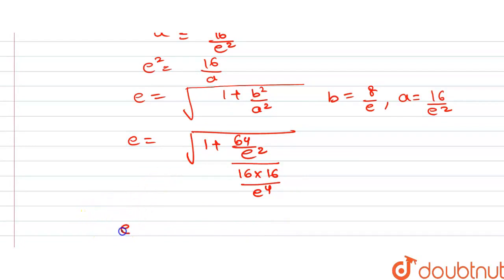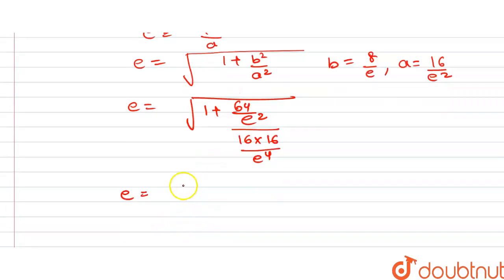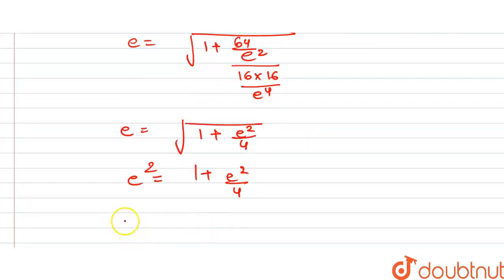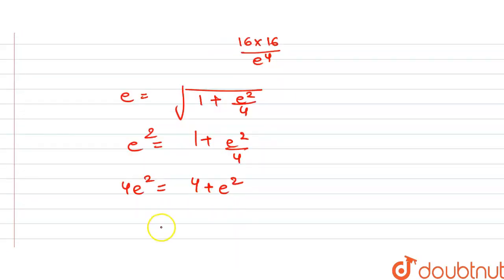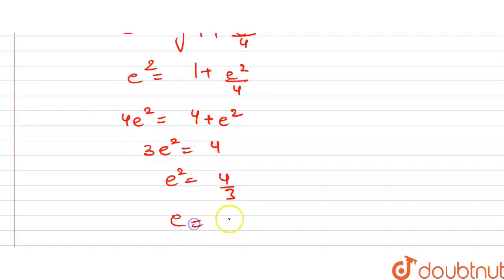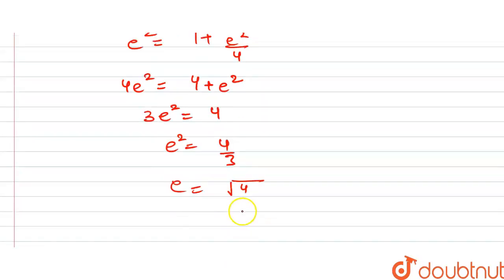From e² = 1 + e²/4, multiplying both sides by 4 gives 4e² = 4 + e², so 3e² = 4, meaning e² = 4/3. Taking the square root, e = 2/√3. So option C is our correct answer. Thank you.